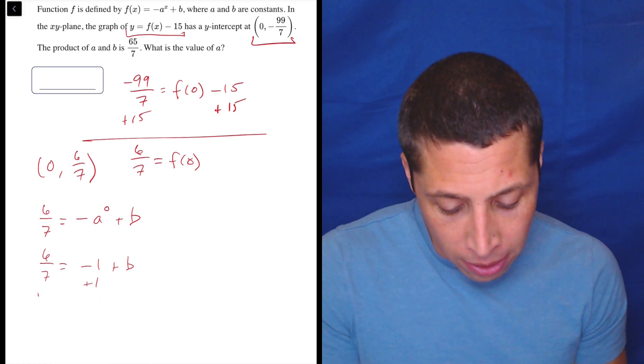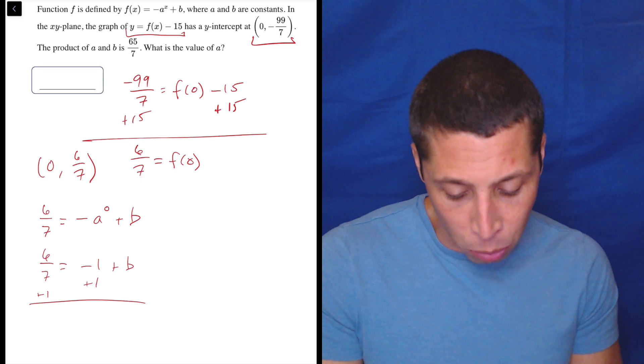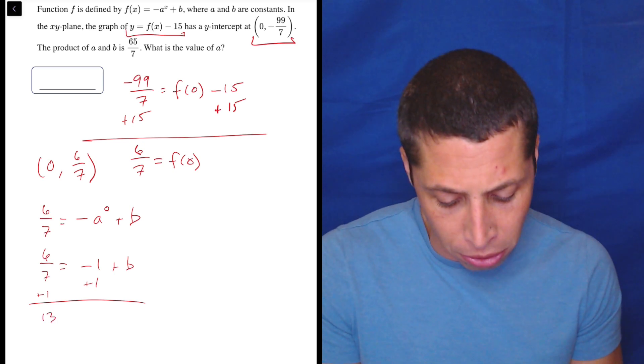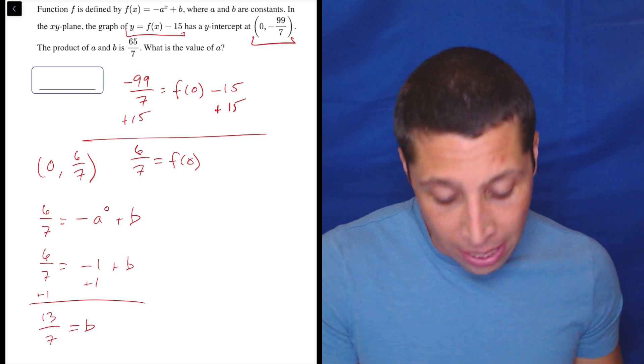So we're going to add 1 to both sides here. I'm much more comfortable—that's 6/7 plus 7/7. So that's 13/7. So that's my B.